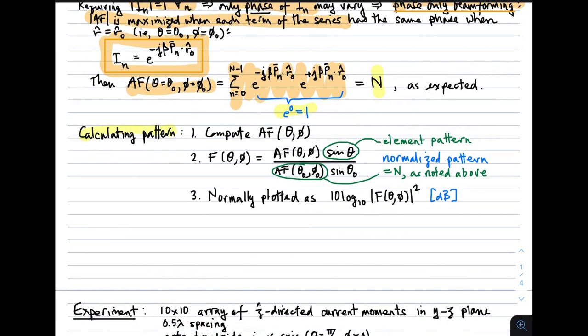To calculate the pattern, we follow the usual steps. First we determine the array factor. The normalized pattern function is the array factor times the element pattern, that's pattern multiplication. And then because it's a normalized pattern function, we divide by the numerator evaluated at whatever direction gives us the maximum value. And we've already determined that the denominator then will be N. And then normally this is plotted as a power pattern, and that's just 10 log 10 of the magnitude of the normalized pattern function squared. And that's in dB or dBi either way.